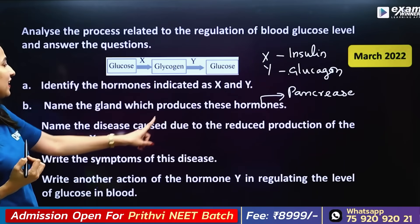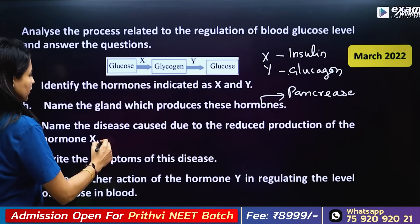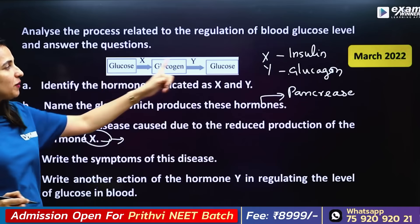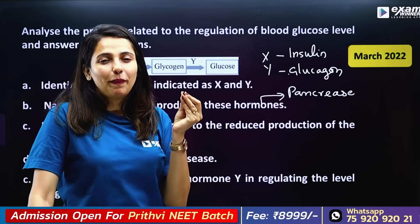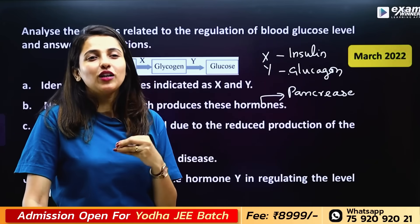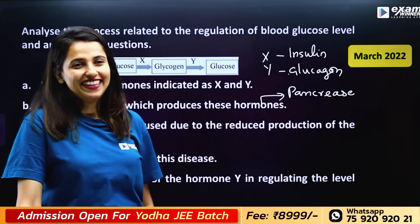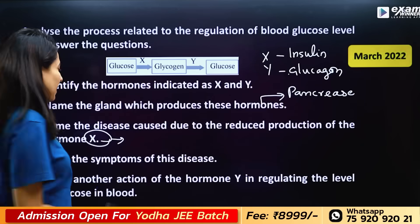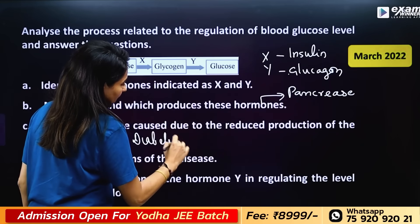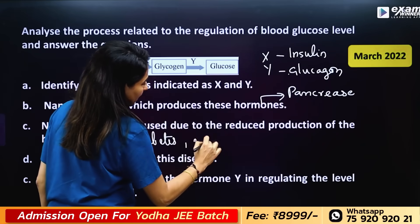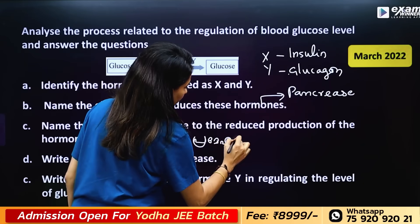Name the disease caused due to the reduced production of hormone X. X means Insulin. The disease is Diabetes — Diabetes is Prameha.